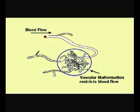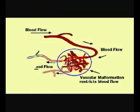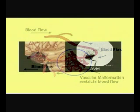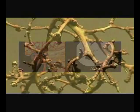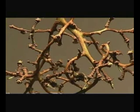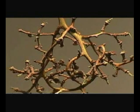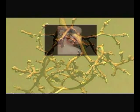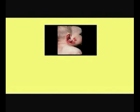Vascular malformations interfere with the normal flow of blood, particularly through arteries, veins, and capillaries. There may be a tangle of veins or arteries that create a malformation resembling a bunch of grape stems or a tangled web of small blood vessels. Visible malformations appear on the skin as a prominent vein or a purple discoloration, but most vascular malformations cannot be seen.